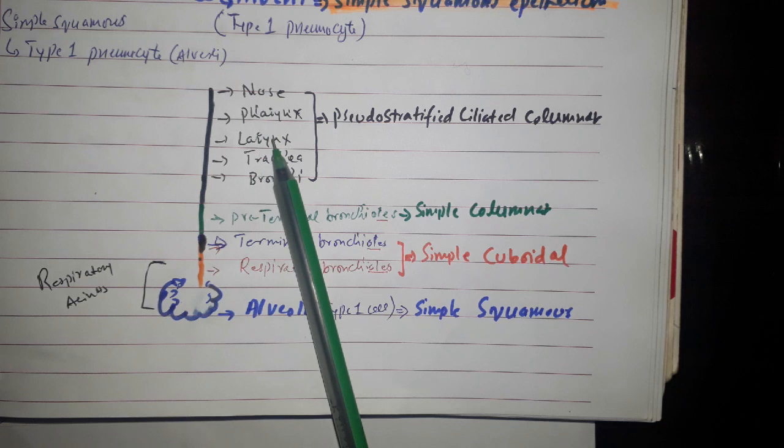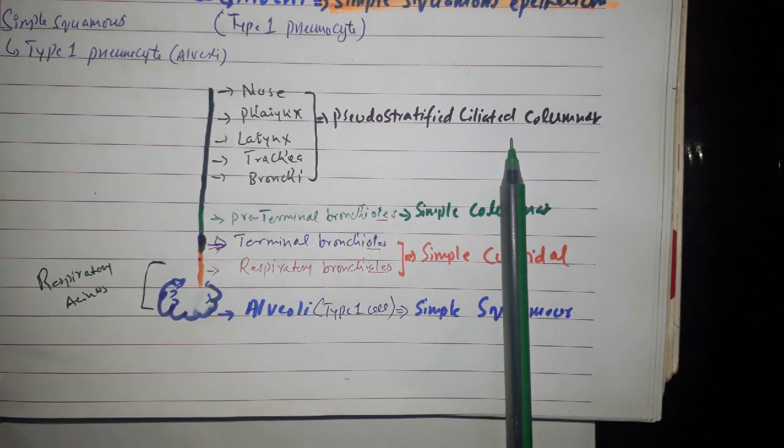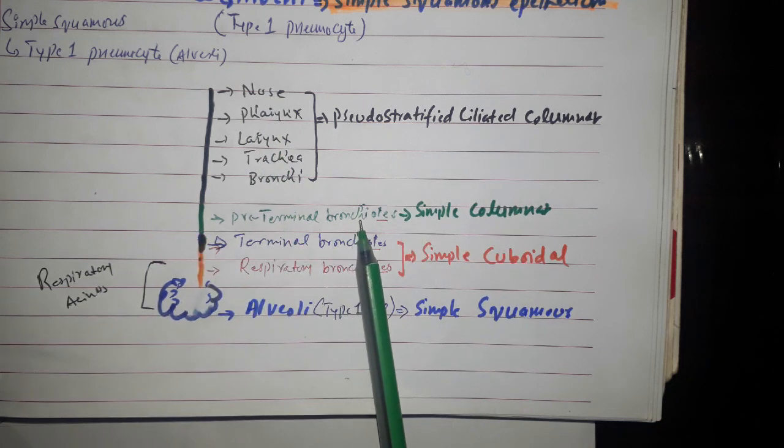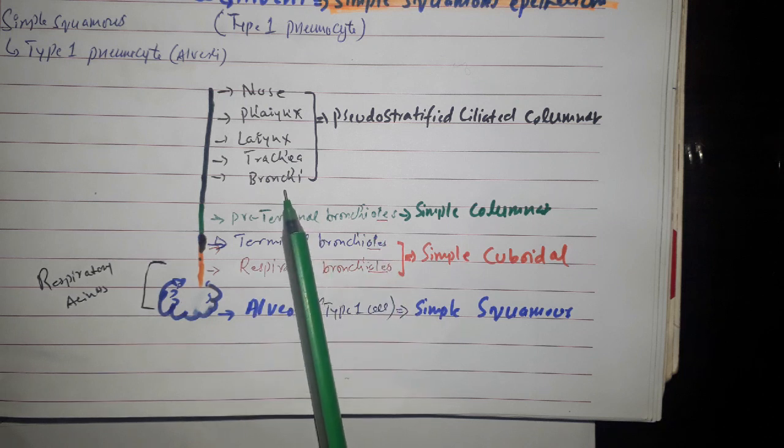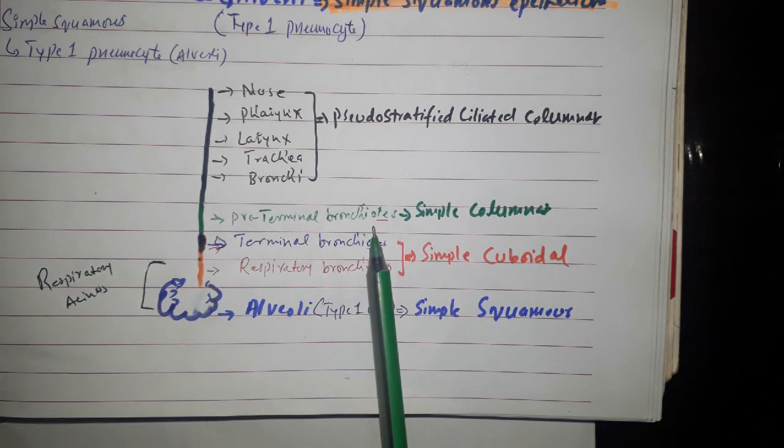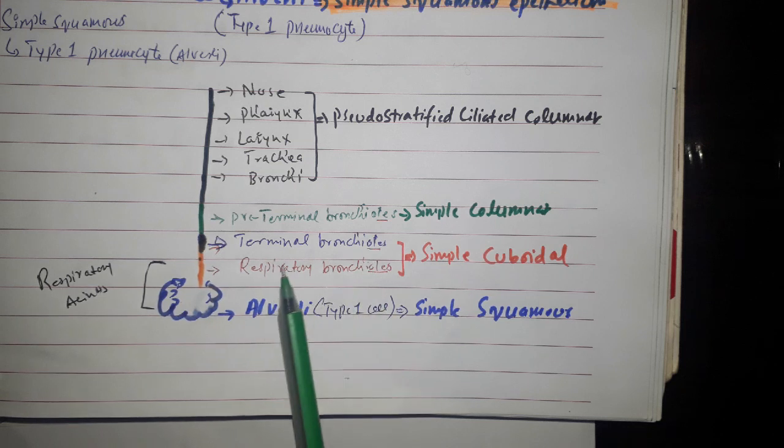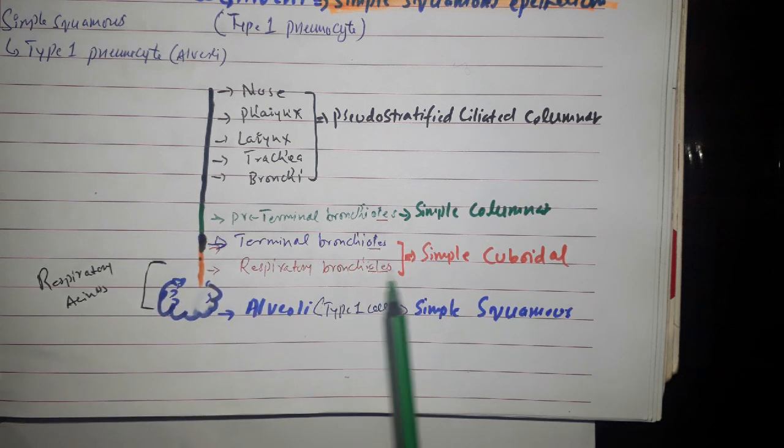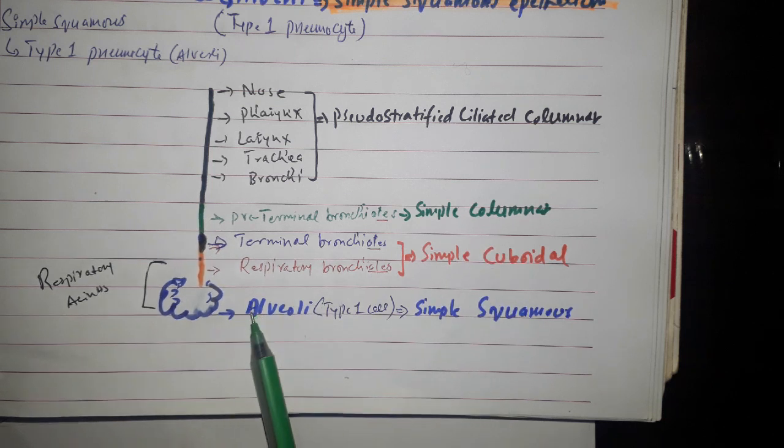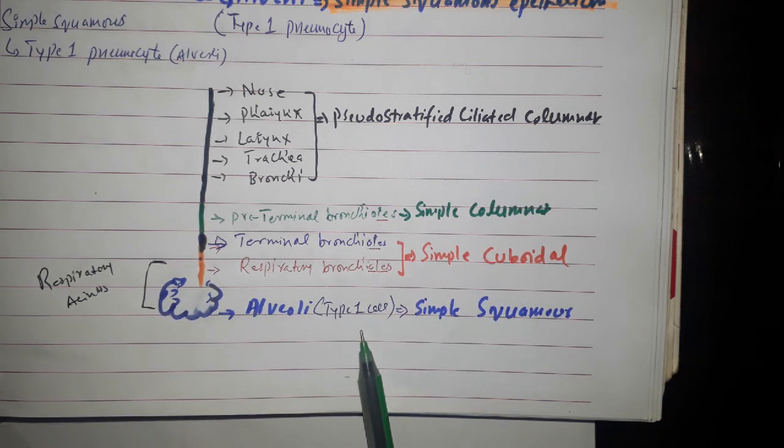Simply just remember no sparing larynx trachea bronchi, pseudostratified ciliated columnar epithelium. Then we have pre-terminal bronchiole. Here this is bronchi and this is bronchiole. Simple columnar epithelium, terminal bronchiole and then we are having respiratory bronchiole. So the terminal and respiratory bronchiole is lined by simple cuboidal.